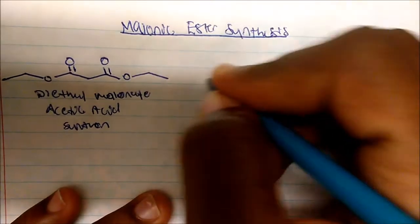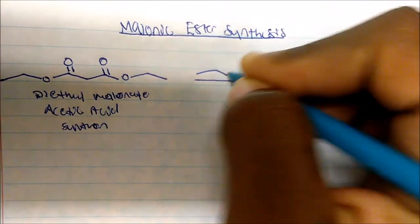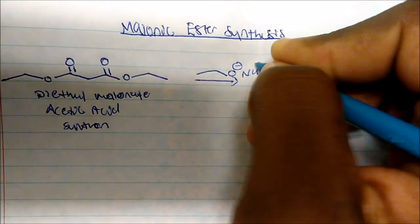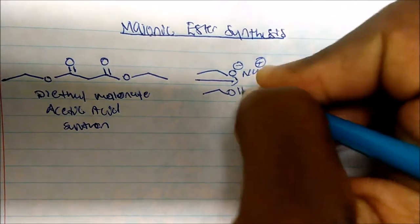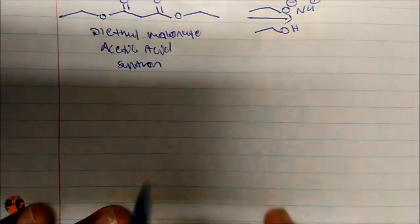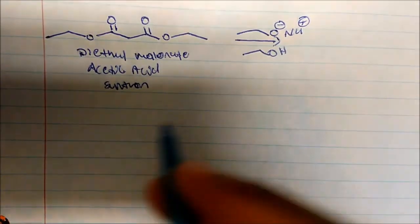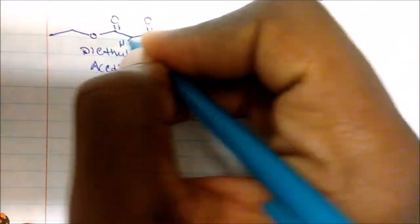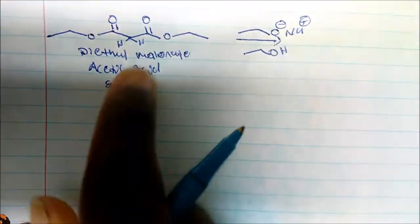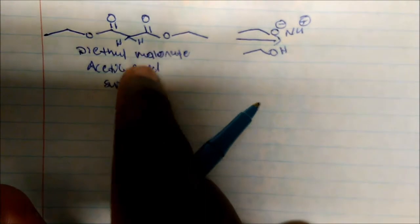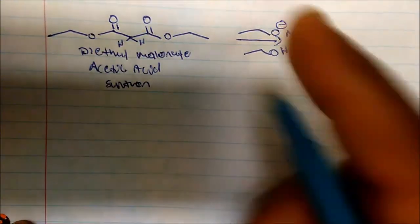So the idea is if you treat this molecule with some sort of base—a strong non-nucleophilic base, such as sodium ethoxide and ethanol—what would I get? Well, where's my alpha carbon? My alpha carbon is smack right there adjacent to the carbonyl. And so here's my alpha carbon in the middle.